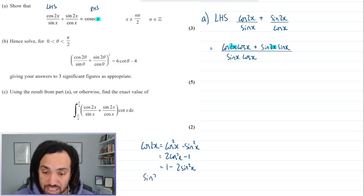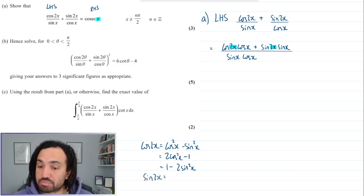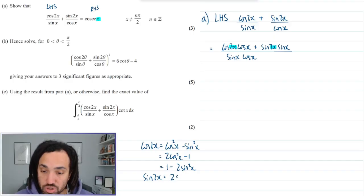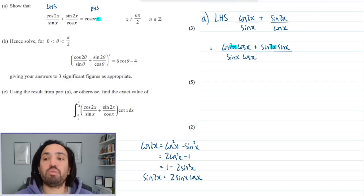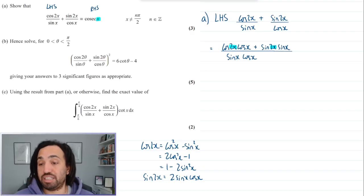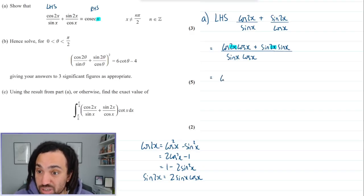Whereas sin 2x only has one expansion which is 2 sin x cos x. Okay so those are our double angles that we should know off by heart. Now I don't know which one to do for cos 2x at the moment so I'm just not going to do it.